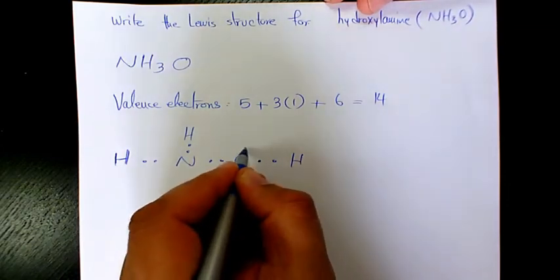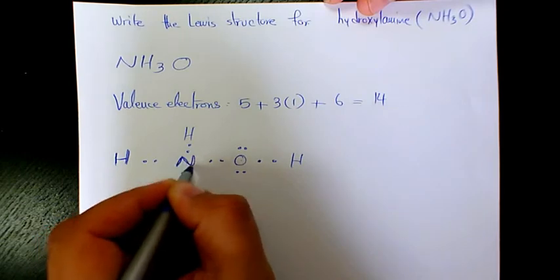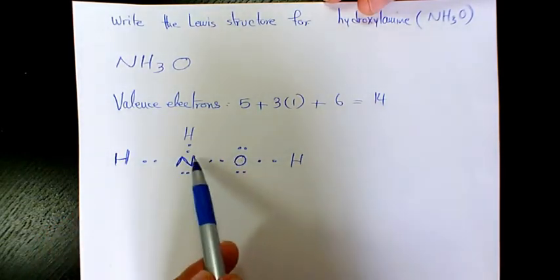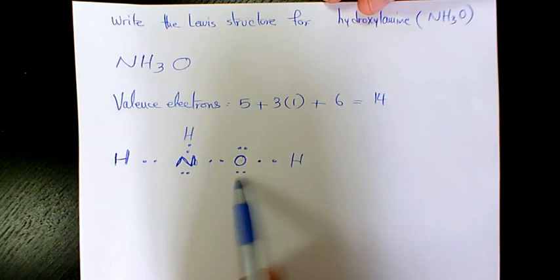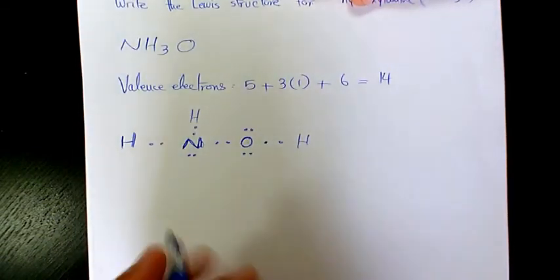So we need to put it here on the central atoms to make it octet. Now, N is octet. Oxygen is octet. So there is no more electrons. We use all 14 electrons.